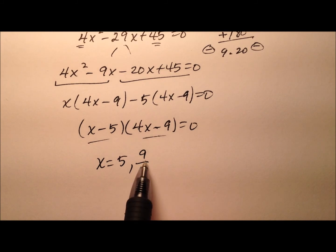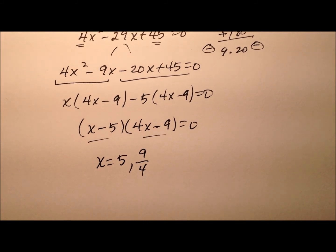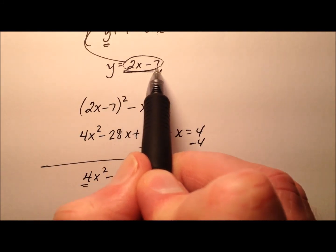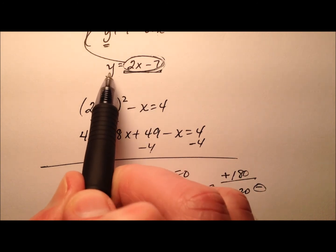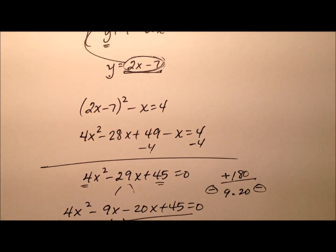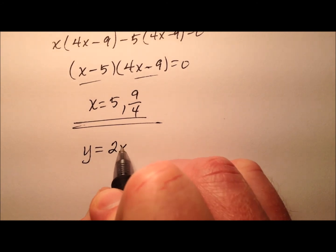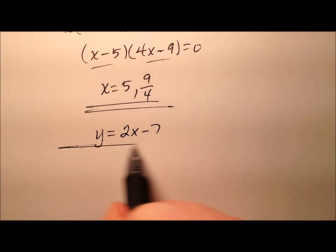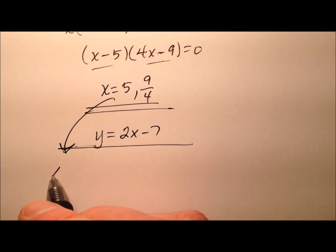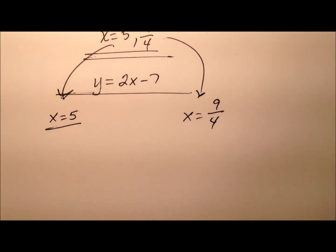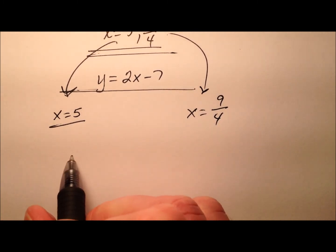So my values of x look like positive 5 and positive 9 over 4. You can also say maybe 2.25 if you like to work with decimals. But we have two values of x here. So we know we can go ahead and plug it back into this expression to find out what the accompanying values of y will be. So y equals 2x minus 7. So 2x minus 7. And I'll put the value of x equals 5 on this side, and maybe x equals 9 fourths on this side. And we'll plug them in and we'll just solve for our values of y.